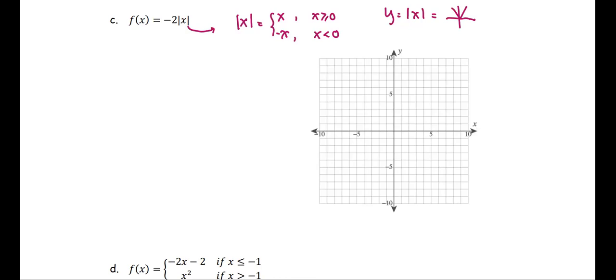So for the function f(x) in part c, we have -2 as the coefficient. If we build the t-table, f(x) = -2|x|. Let's see if x is -2, -1, 0, 1, 2.